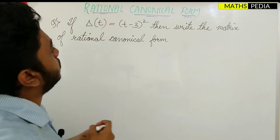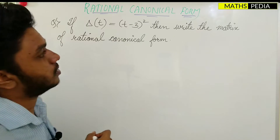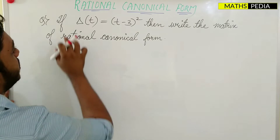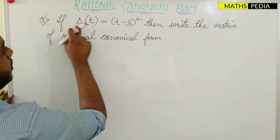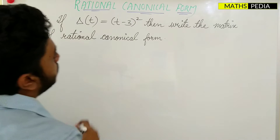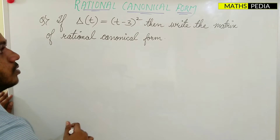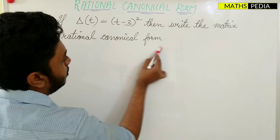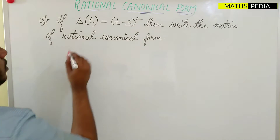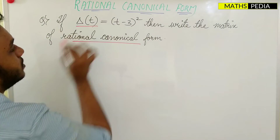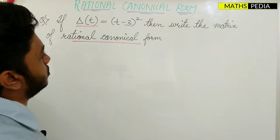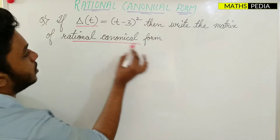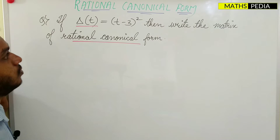Hello guys. In this video we'll try to understand rational canonical form. We'll take one question: if Δ(T) = (T-3)² then write the matrix of rational canonical form. Δ(T) is nothing but the characteristic equation, so they will give you the characteristic equation and you need to write the matrix for rational canonical form.